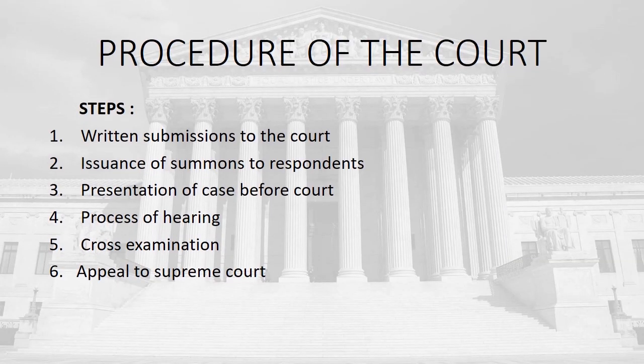The court procedure has six basic steps. First, summons are issued to the respondents by the Registrar. In the third step, the case is presented before the court, followed by the process of hearing. After proceedings there is cross-examination — verification of documents and affidavits to check for any concealments or misstatements. Finally, if you are the aggrieved party, you may appeal to the Supreme Court.